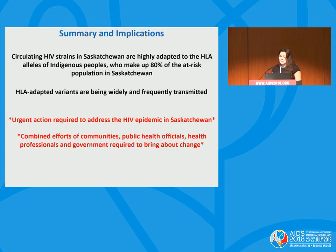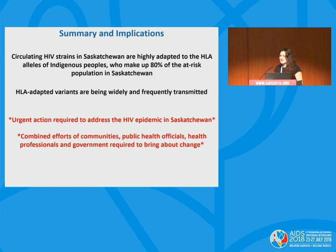In summary, circulating HIV sequences in Saskatchewan are highly adapted to the HLA alleles of indigenous peoples who make up 80% of the at-risk population, and HLA-adapted variants are being widely and frequently transmitted. This work underscores the urgent need to address the HIV epidemic in Saskatchewan — things are worse than previously thought — and will take combined efforts of affected communities, public health officials, health professionals, and government to bring about appropriate, effective, and culturally sensitive change.